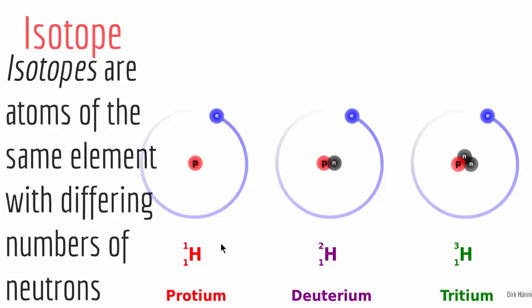So for example, hydrogen here, it has three isotopes. Here it has zero neutrons. It has one neutron and it has two neutrons. These are the isotopes of hydrogen.